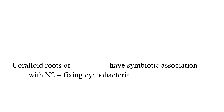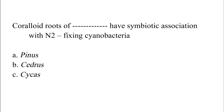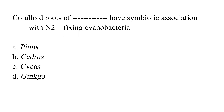Coralloid roots of which plant have a symbiotic association with nitrogen-fixing cyanobacteria? Option A. Pinus, Option B. Cedros, Option C. Cycas, Option D. Ginkgo. The correct answer is Option C, which is Cycas.